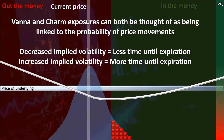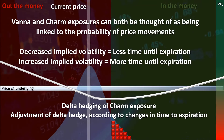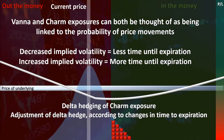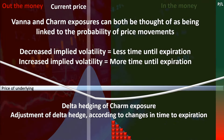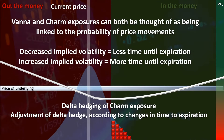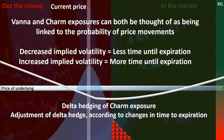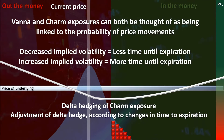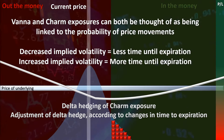The way market makers delta hedge their Charm exposure is essentially identical in principle to the way they delta hedge their Vanna exposure. In the same way that implied volatility changes the probability that an option will expire in the money and thus changes the delta of the option, time until the option expires also changes the probability that an option expires in the money and can change the delta of an option independently of price movements. Thus Charm exposure is analogous to Vanna exposure in that less time until expiration has the same effect as decreasing implied volatility by narrowing the probability distribution of price changes, whereas more time until expiration has the same effect as increasing implied volatility by widening the probability distribution of price changes.